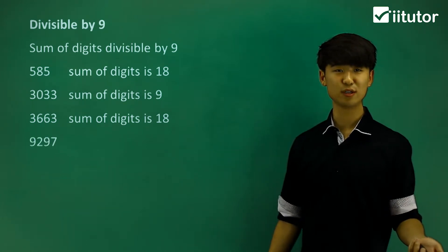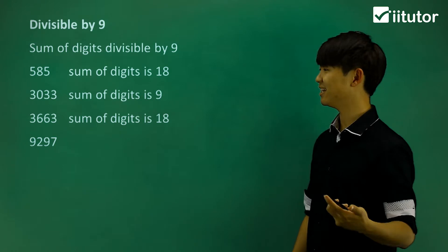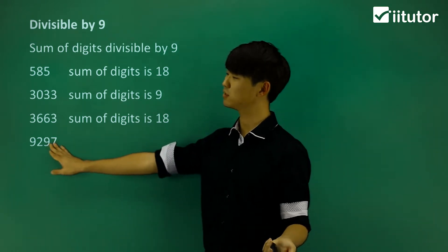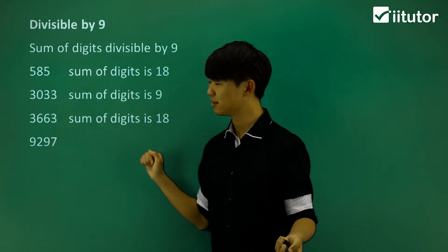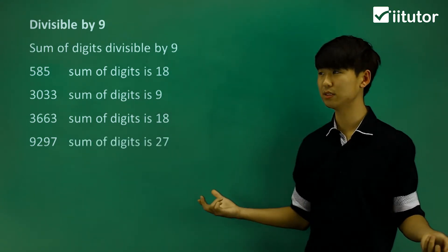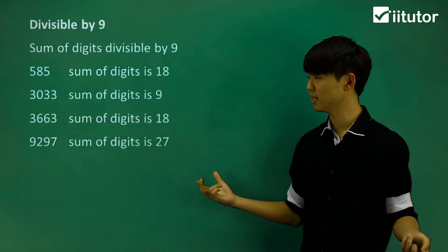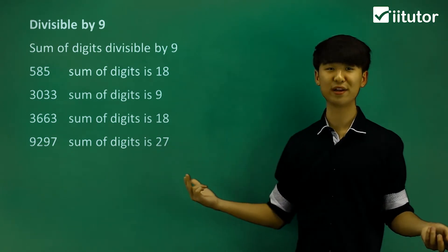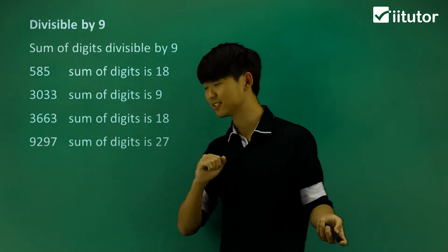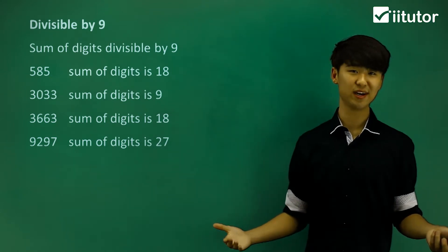Now one more example is 9297. No matter how complicated my numbers look, the sum of the digits here gives me 27. And 27 is divisible by 9. That means this number, 9297, is also divisible by 9.